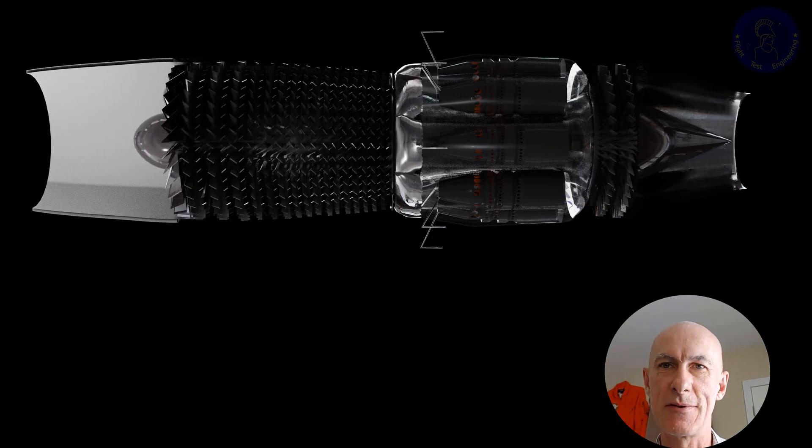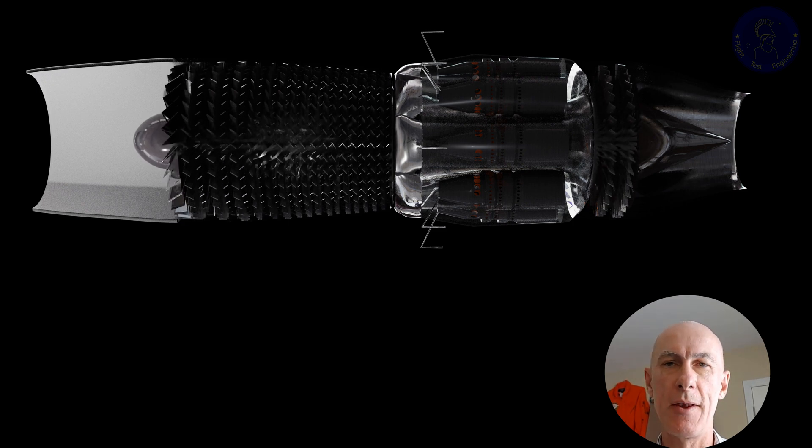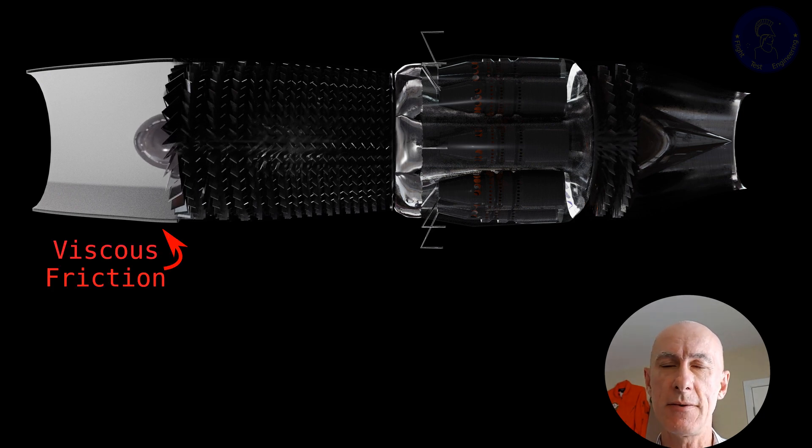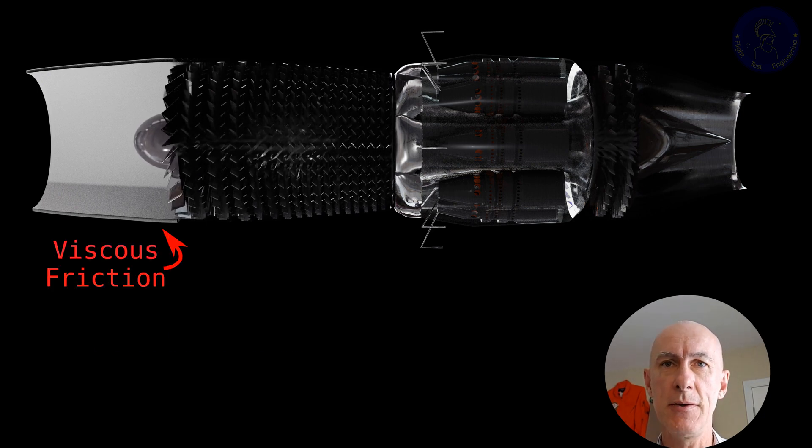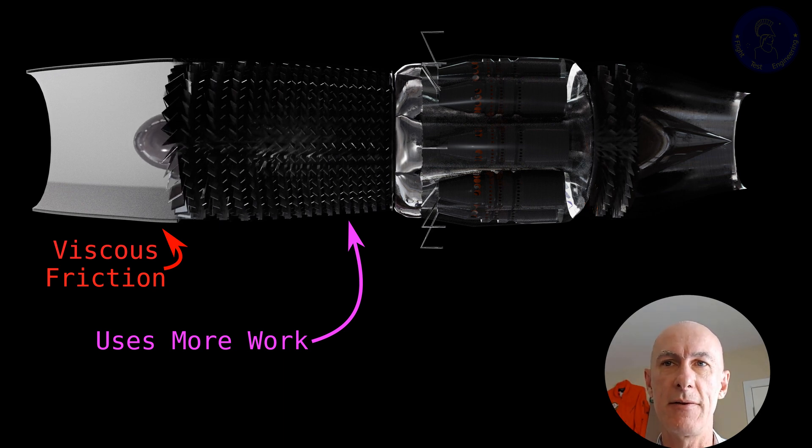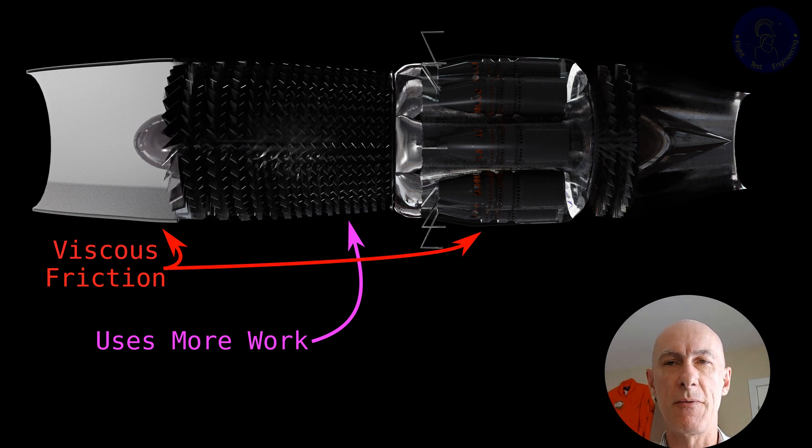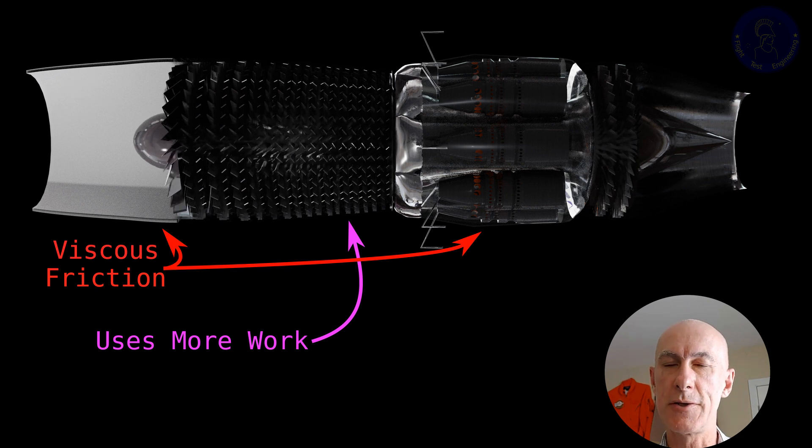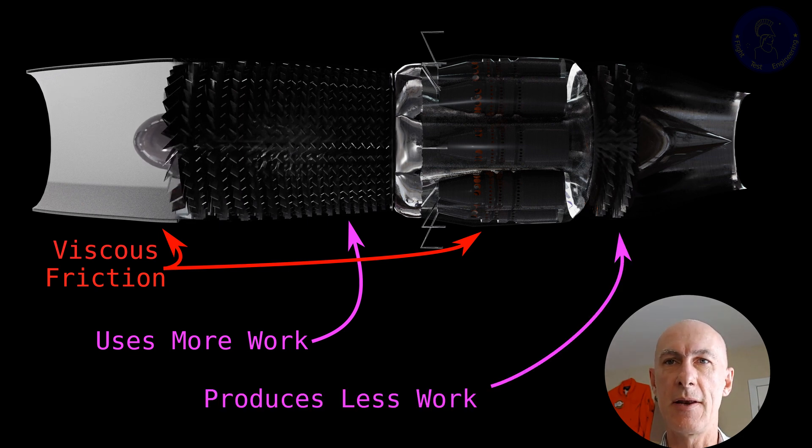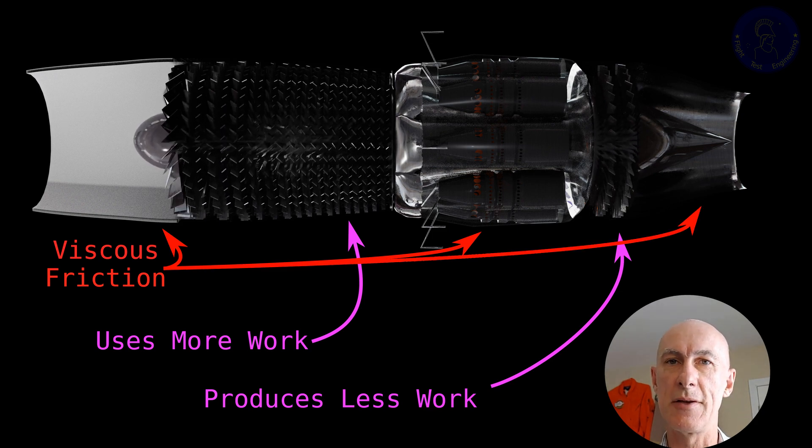So these typical assumptions simply won't cut it for us. And instead, we'll look at a much more realistic scenario. We'll add viscous friction to the fluid going through the inlet, losing energy and pressure. We'll say that the compression has its inefficiencies and will use more energy than the ideal process. The combustor will need a lot of turbulence in its flow to keep the flame lit, so it will also lose pressure. And the turbine will produce less work than expected in an ideal process. And finally, the nozzle will also dissipate energy when accelerating the flow.